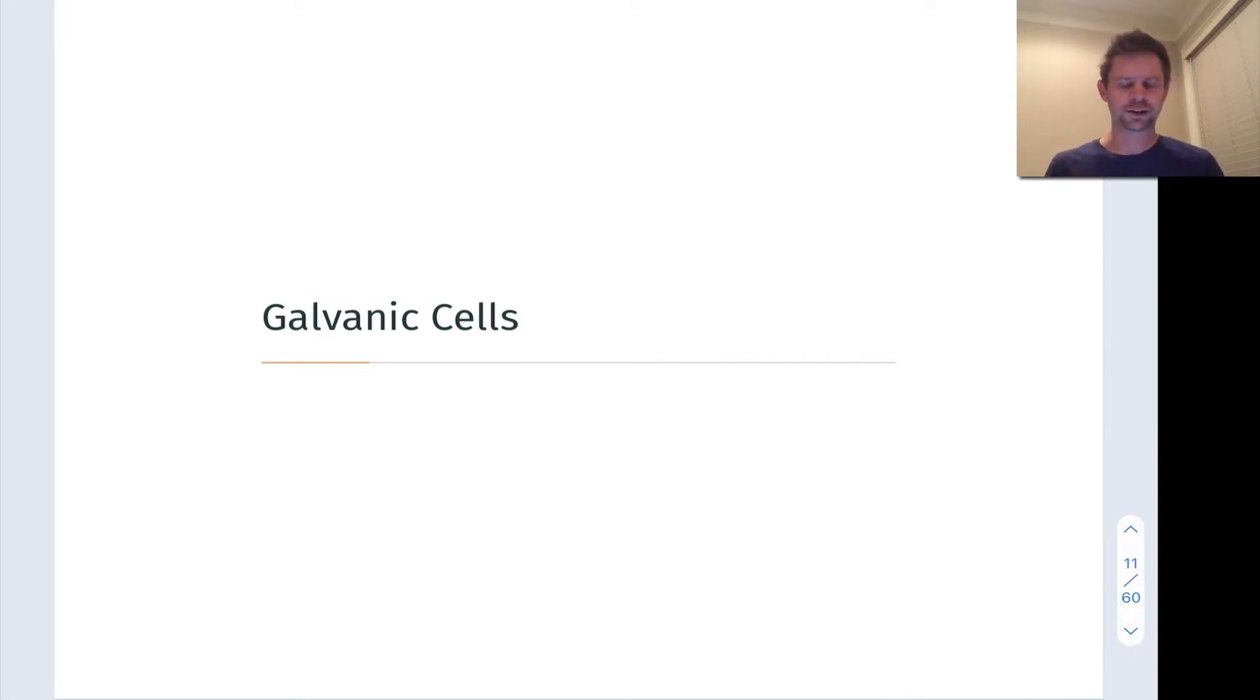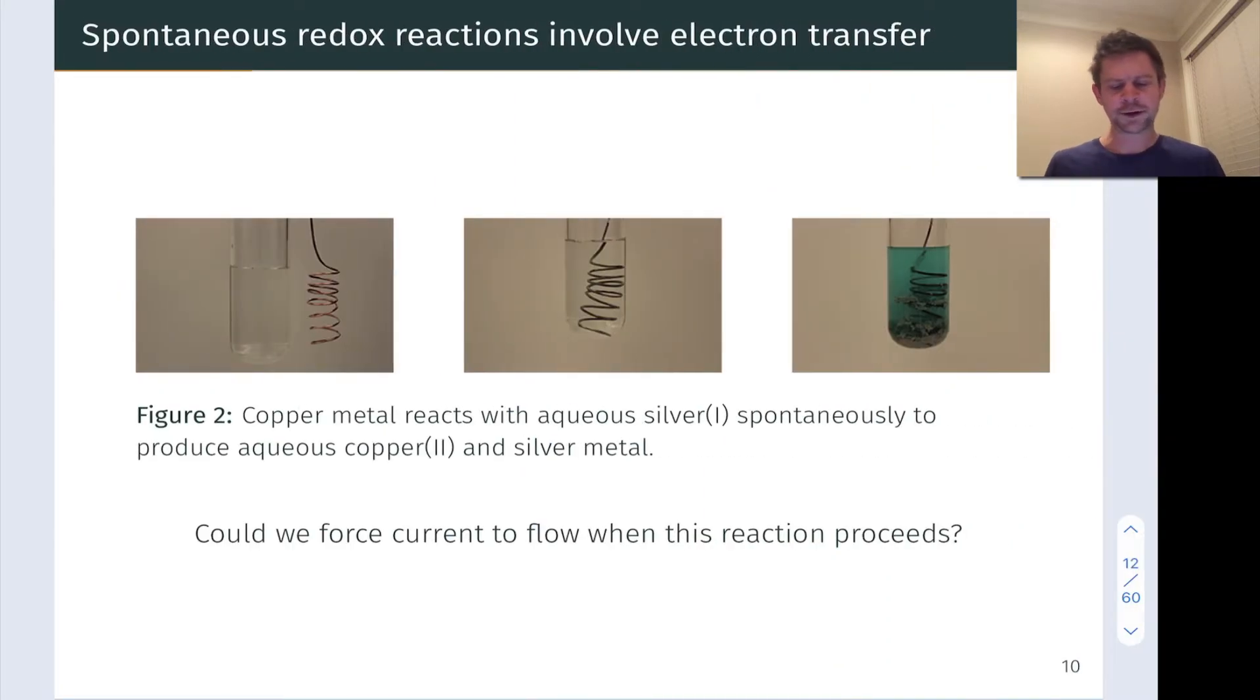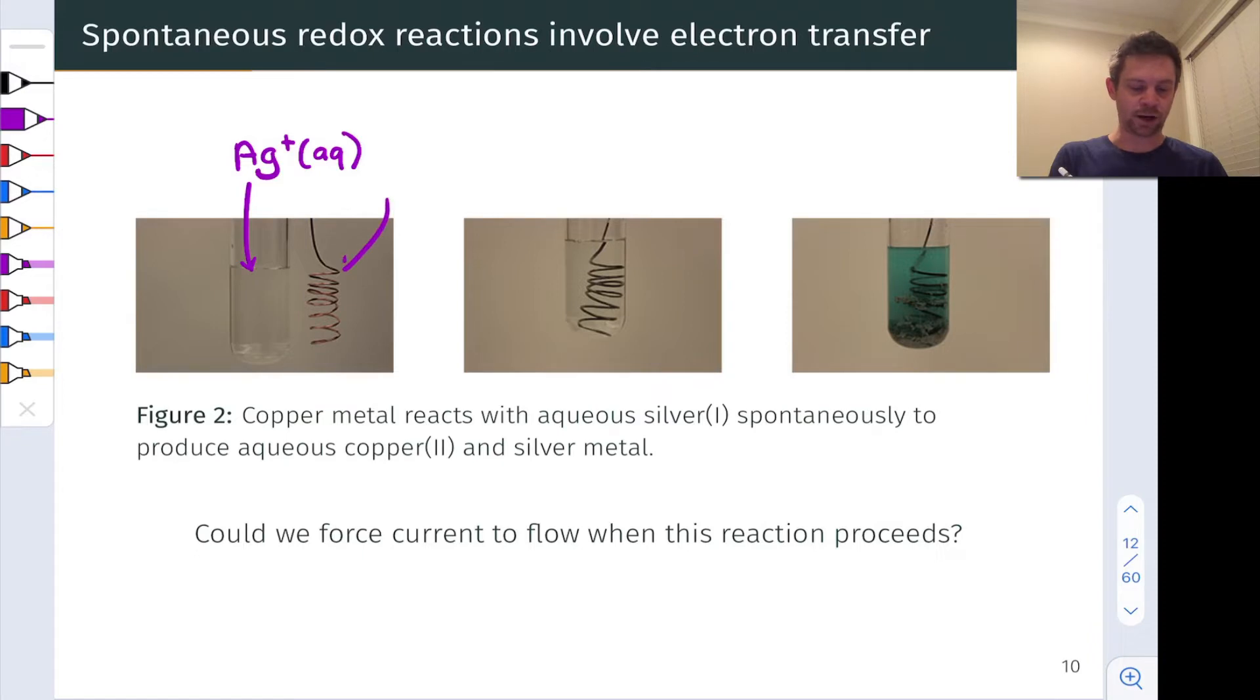Before we get into the specifics of a galvanic cell, let's take another look at a spontaneous redox reaction, this one between copper metal and aqueous silver cations. The solution you see here, the colorless solution, is aqueous silver nitrate, and the redox active portion of this solution are the silver plus cations. Here we have a copper wire, which is copper metal.